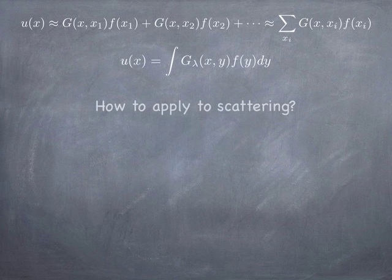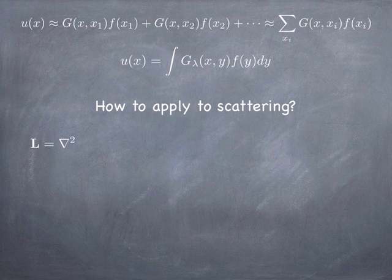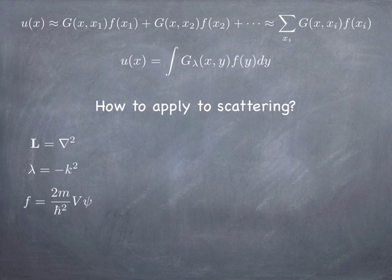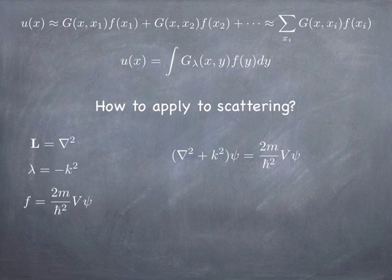How do we apply this to the scattering problem? The operator L becomes del squared — that's the kinetic energy operator from the Schrödinger equation. The quantity playing the role of lambda is essentially k squared, the wave number squared. The source term is the potential times the wave function. We flip the Schrödinger equation around, moving the potential energy to the right-hand side and the kinetic and total energy (k squared) to the left.